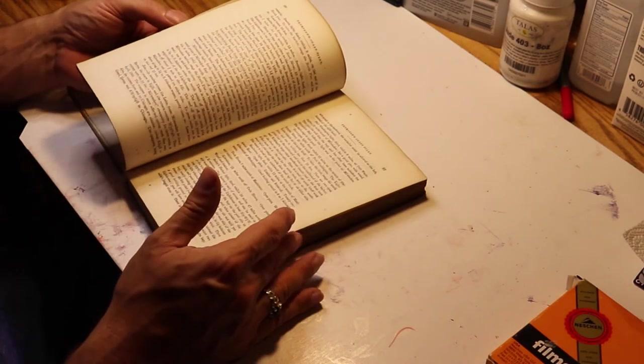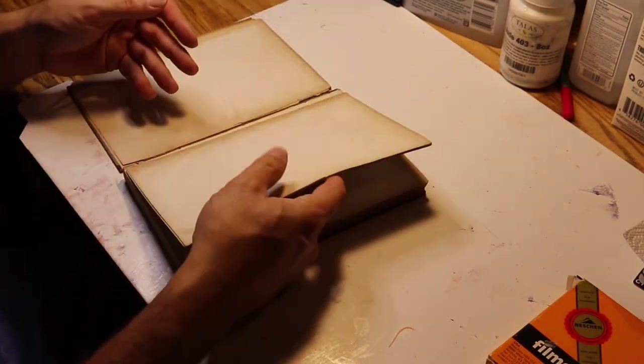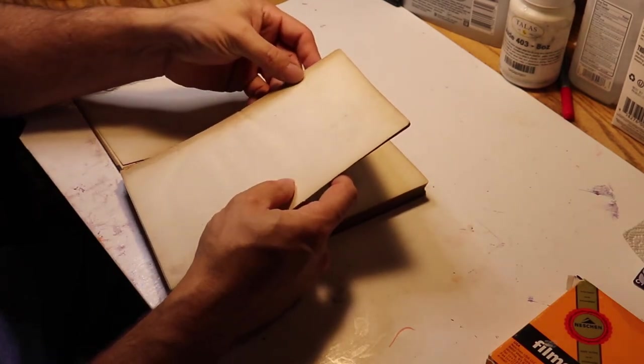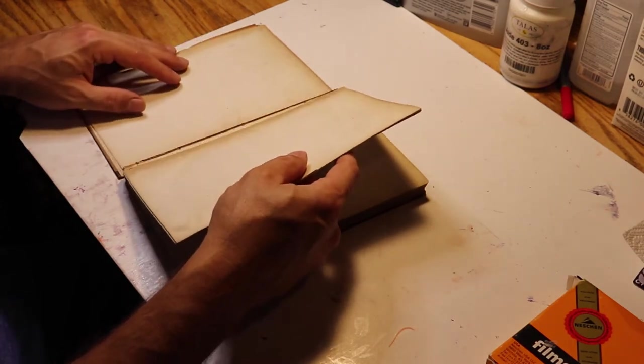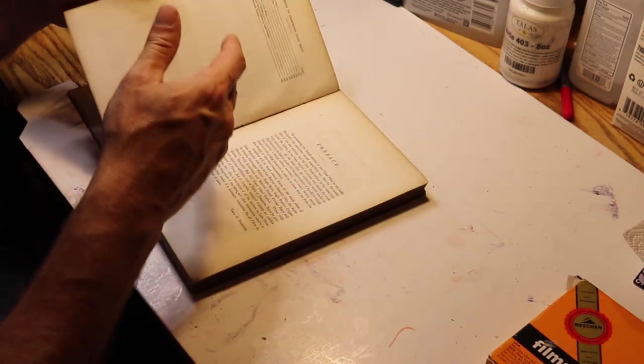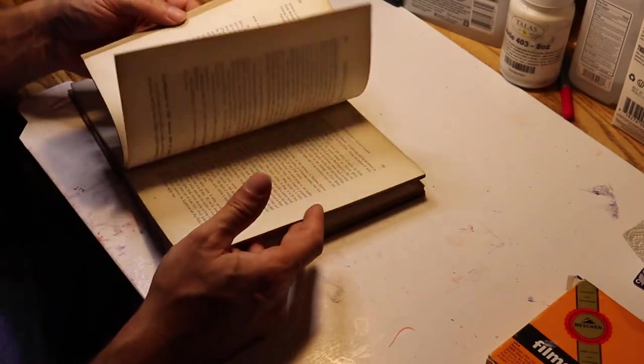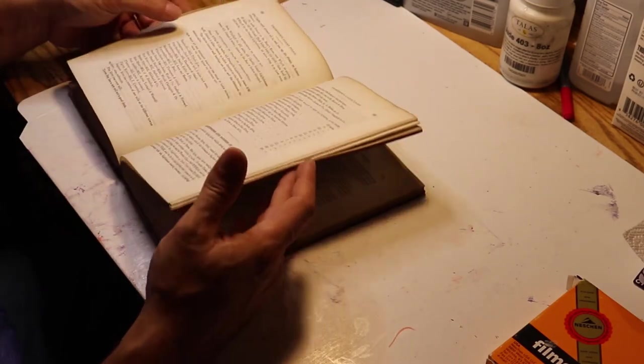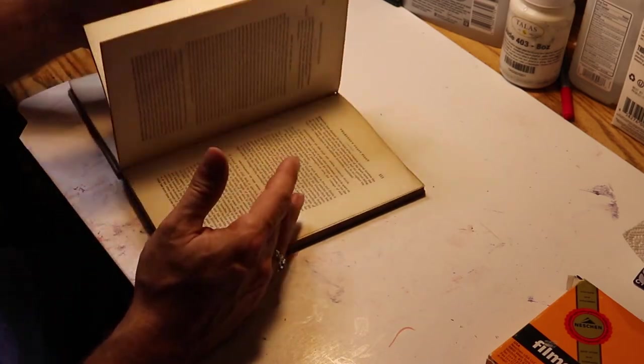So we look through the book and it seems pretty solid inside. Although, wait, what's this? This is called a signature where a group of pages are put together. And this whole signature is essentially free and somewhat disbound. So that's something to note. As we go through, there's no writing or anything pressed in the pages. I've found money pressed in pages before. Not a lot, but...